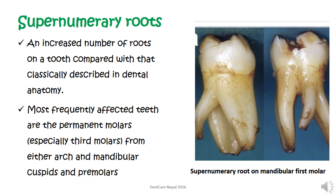Supernumerary roots refers to an increased number of roots on a tooth compared with that classically described in dental anatomy. As we can see in the figure, this mandibular first molar has an additional root. Normally it should have one mesial root and one distal root, but here there is another small root coming from the lateral buccal aspect. The most frequently affected teeth are the permanent molars, especially third molars from either arch, and mandibular cuspids and premolars.